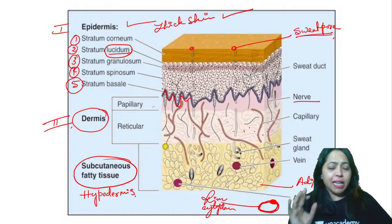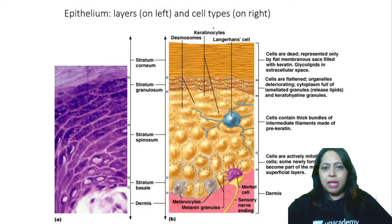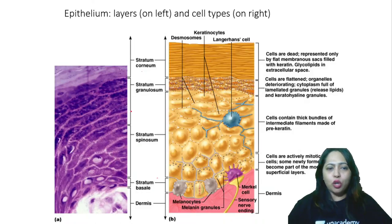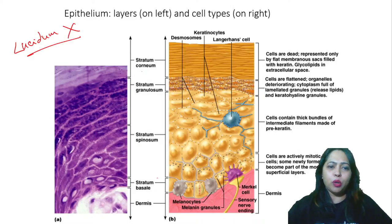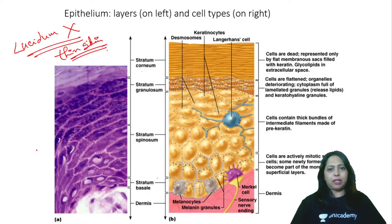This is also thick skin because you can see the stratum corneum is very thick, then granulosum, spinosum, and basale, then the dermis. They have not shown any lucidum here — since I don't see the lucidum, you can call this thin skin. The hair follicle is also not shown here. You can see these cells — they are dead cells filled with keratin material.